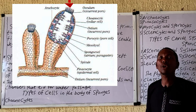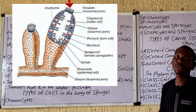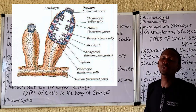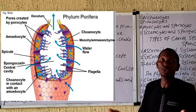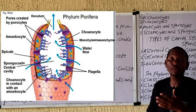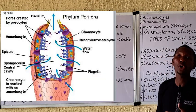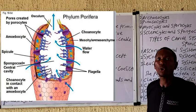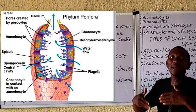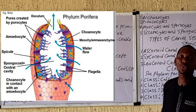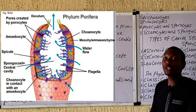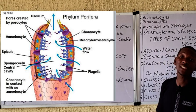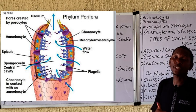How do these organisms carry out excretion and respiration? It is simply through the process of diffusion as the water flows through the body of these organisms. These organisms also carry out reproduction usually through the process of budding and fragmentation in asexual reproduction.